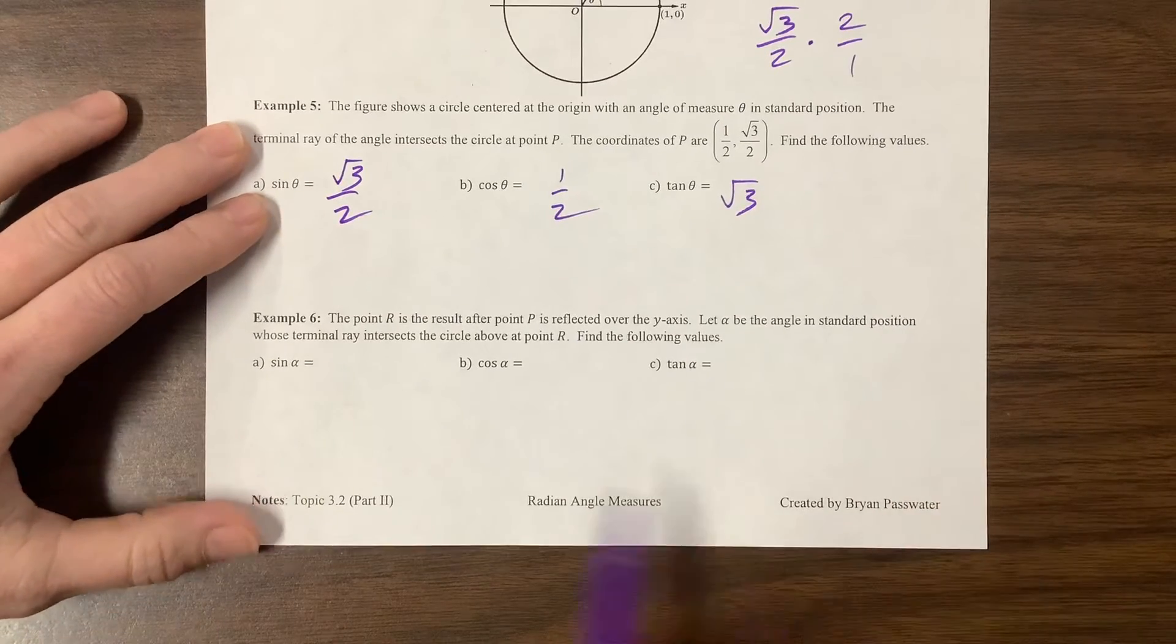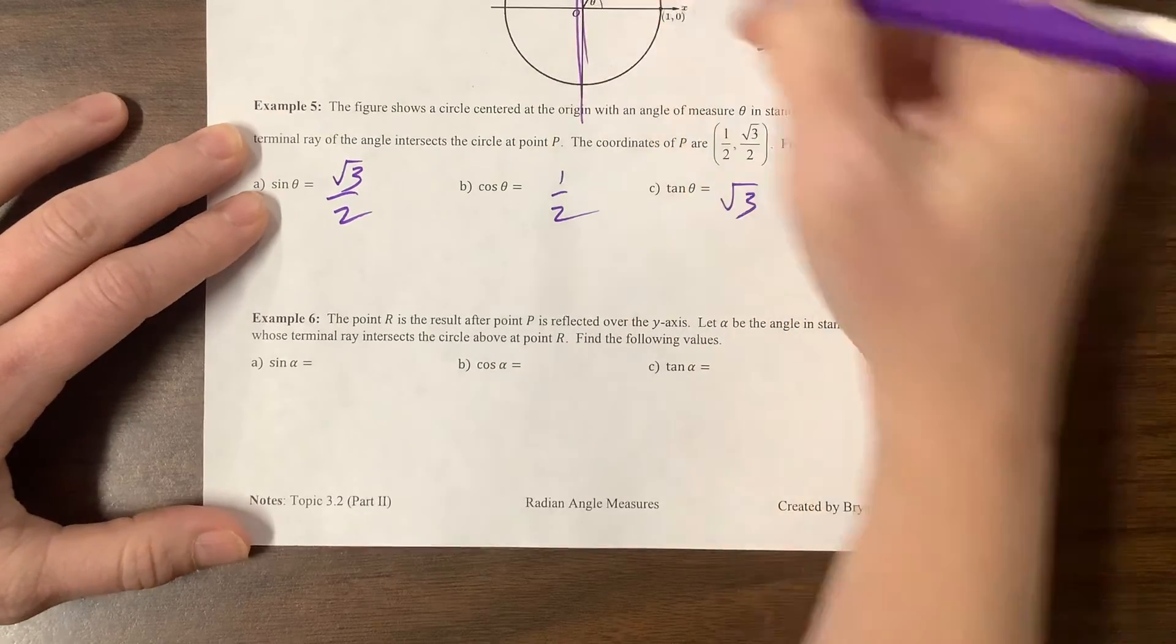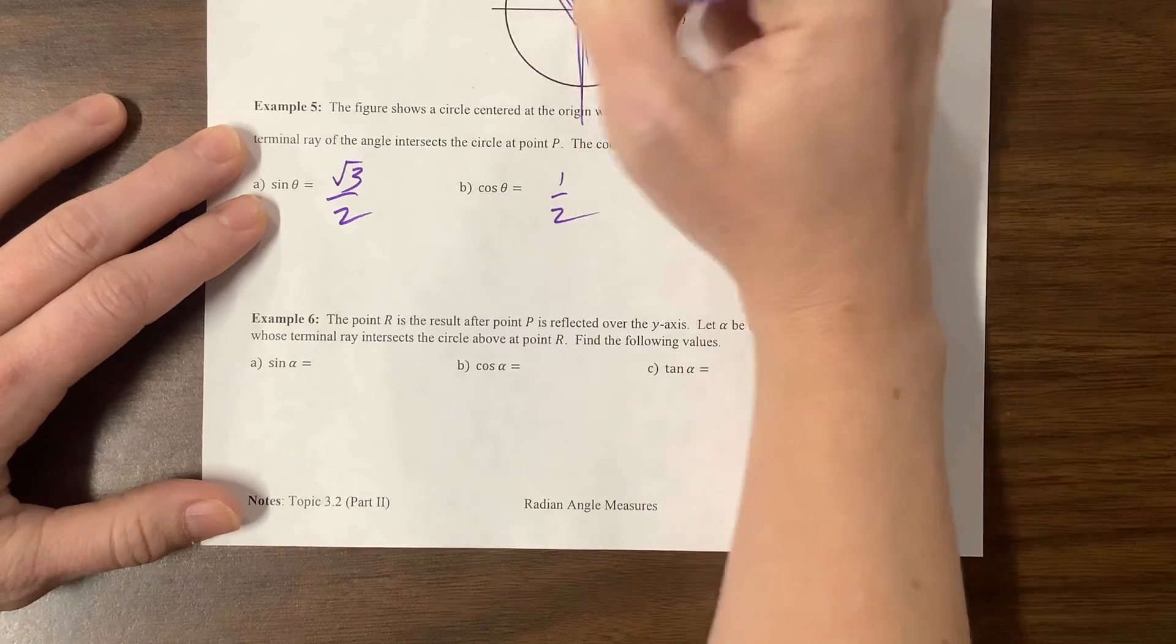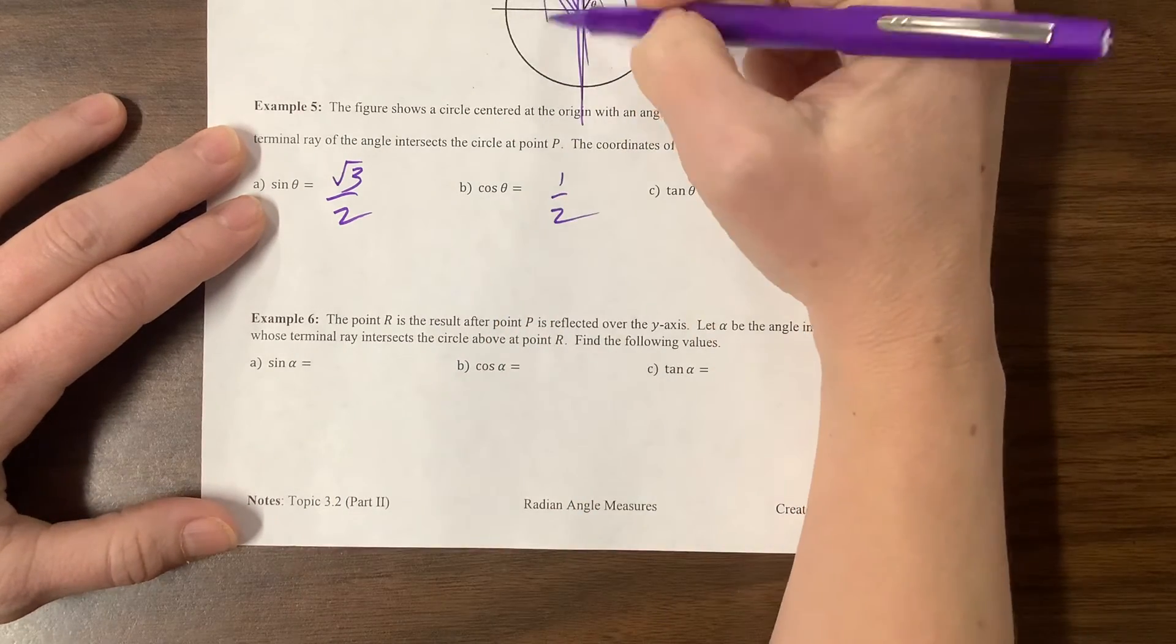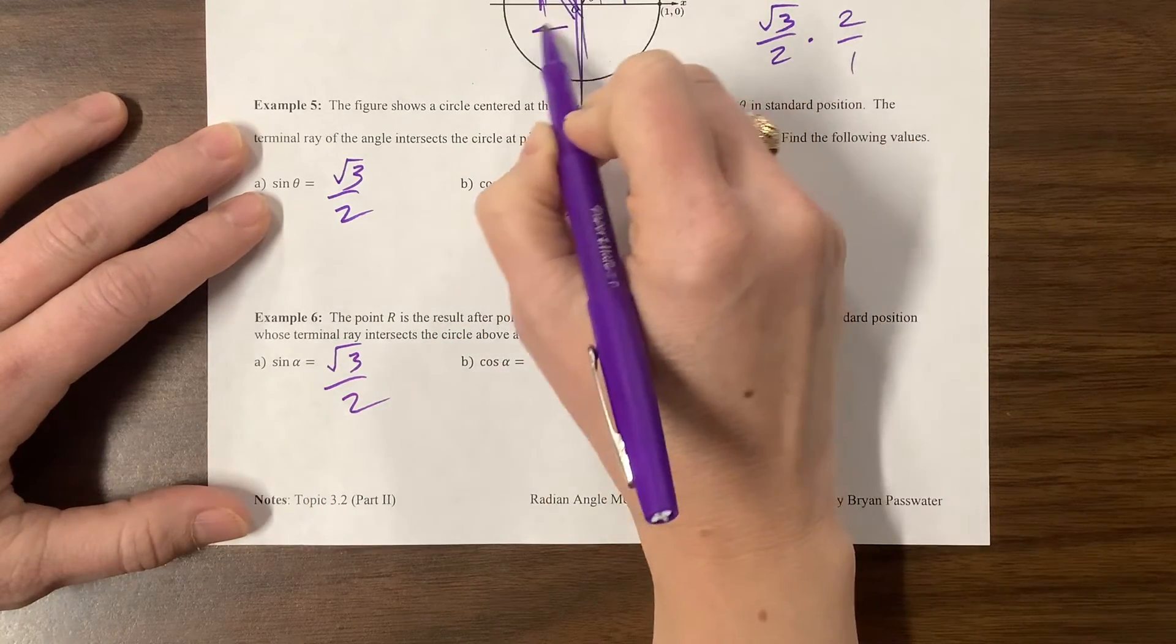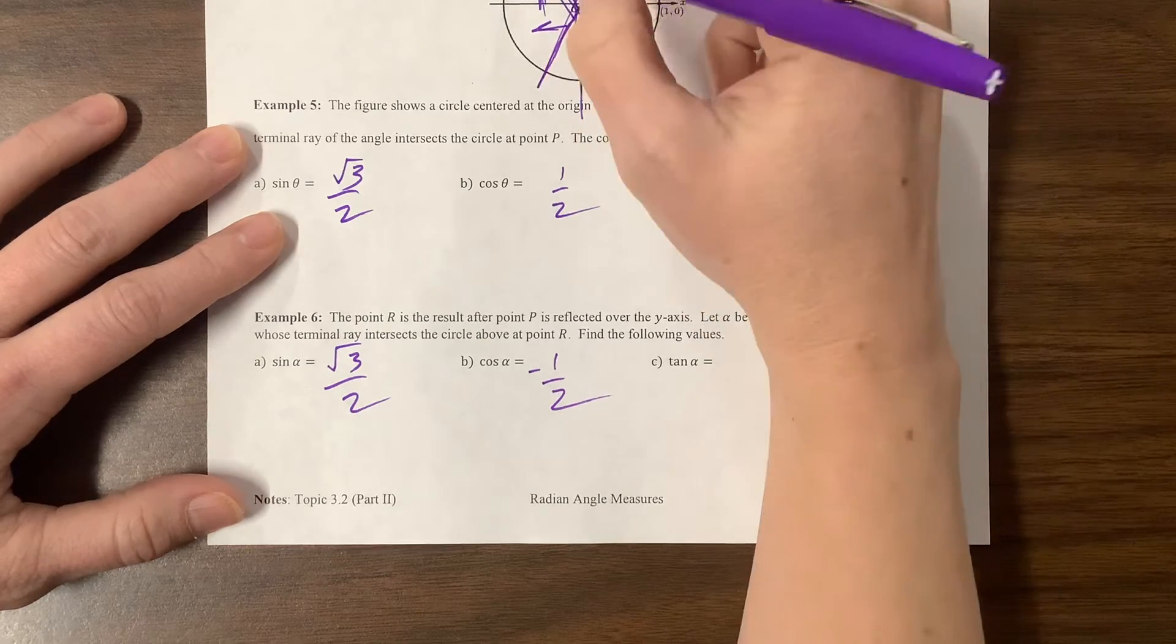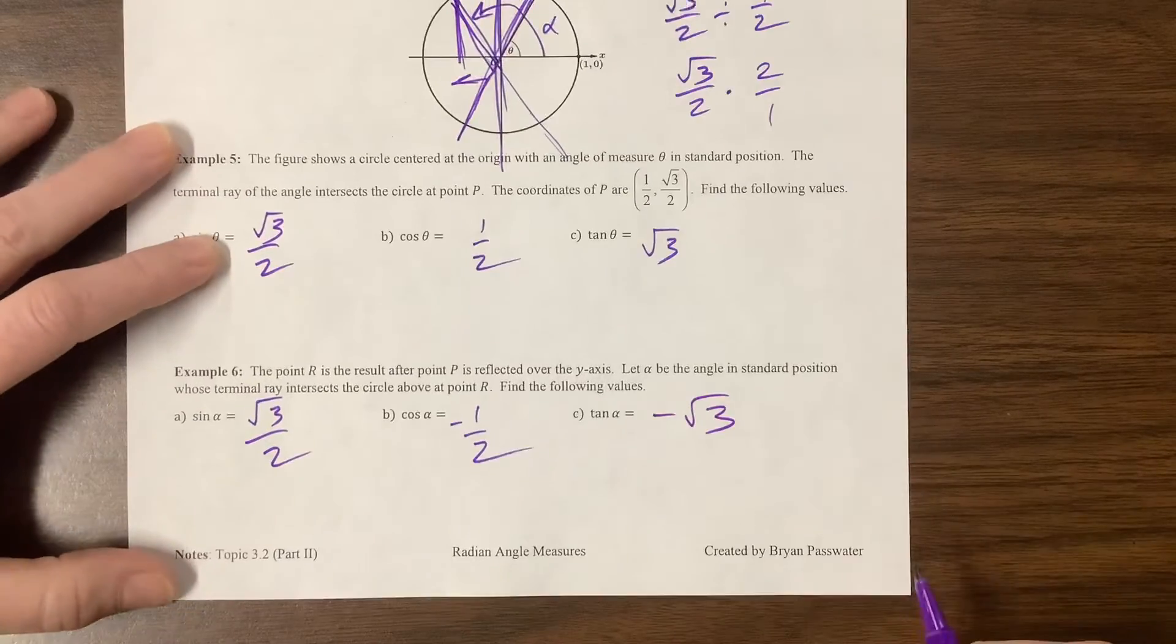The point R is the result after point P is reflected over the y axis. Here's the y axis. Let alpha be the angle in standard position. So basically this point has now reflected over here. And so, pretend I can draw a straight line. This angle is alpha. So sine of alpha, it's the same, it has the same y value. So it's still root 3 over 2. The cosine value is now moving in the negative direction. And the tangent would have, notice, it's the same values. This is a positive slope here and this is a negative slope here. Oh, I'm sorry. You couldn't see what I was writing. Well, anyway, negative root 3 is the answer to that.